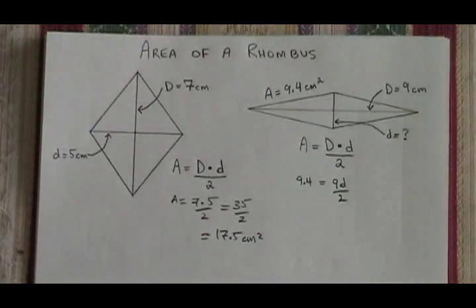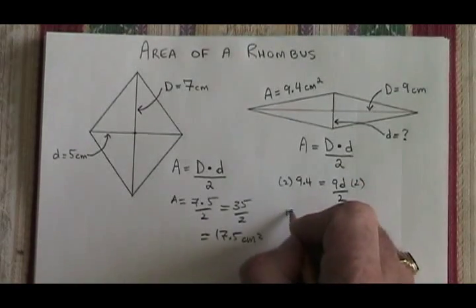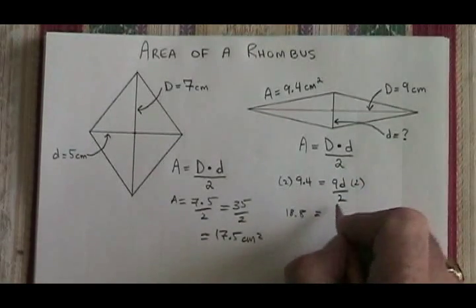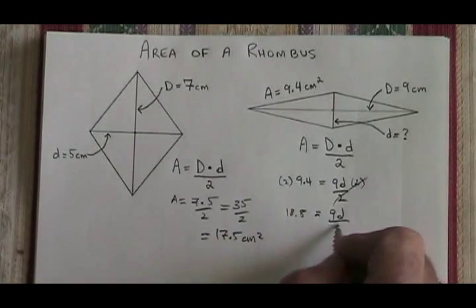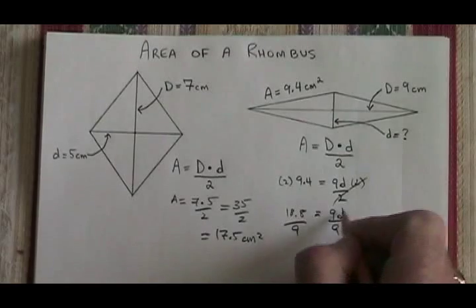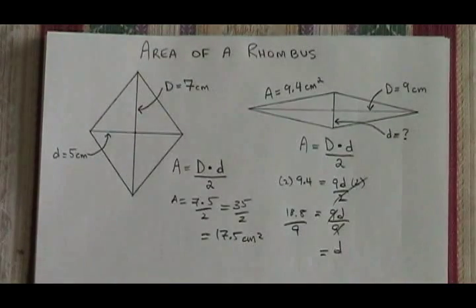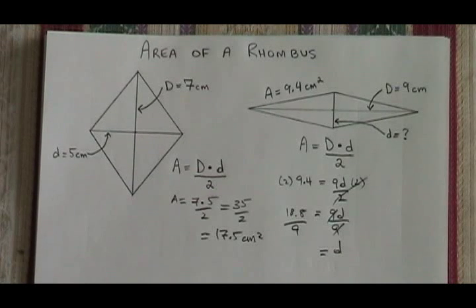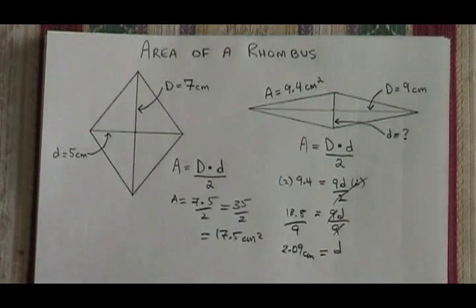The little d is our unknown. If we multiply both sides by 2, we get 18.8 equals 9d. We divide both sides by 9, and our little diagonal is equal to 2.09 cm. This is how you use the formula for the area of a rhombus.